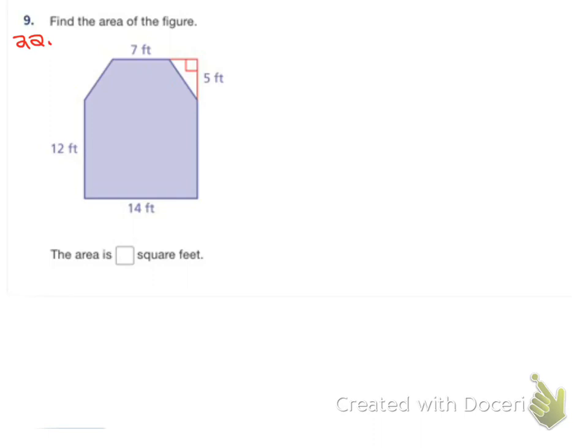We have to find the area of this figure. So we have a couple of options. We could make this a big rectangle and subtract out these two triangles, which is a nice, easy option. Or we could find the area of this trapezoid up top and this rectangle down here, so two shapes.